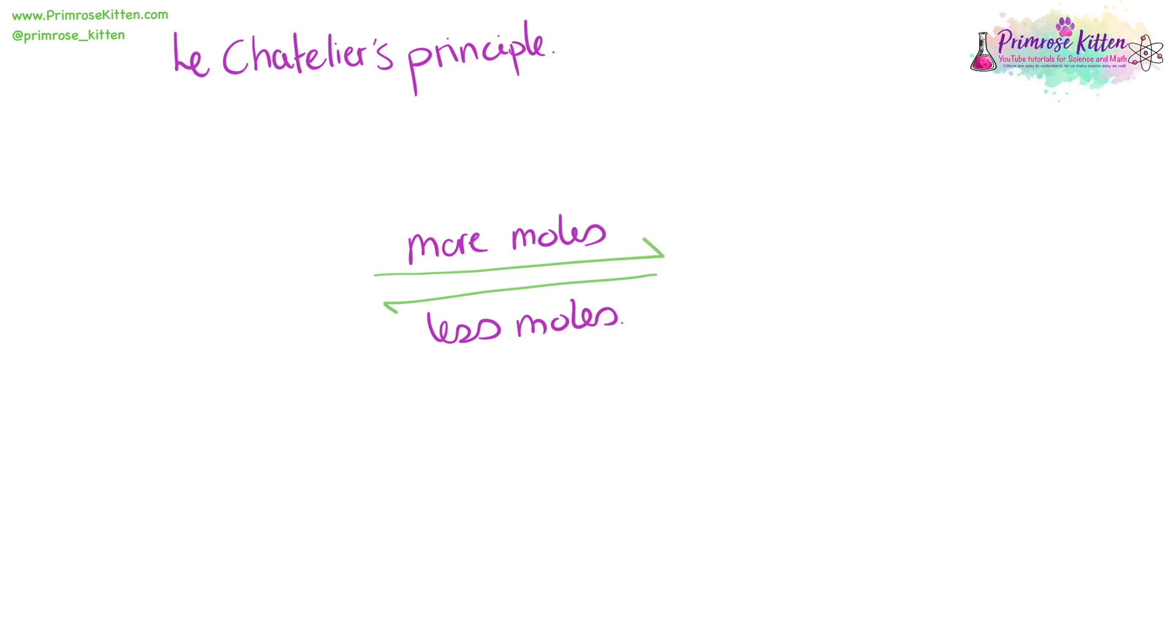If you're going to change the temperature or the concentration, the reaction will also adjust itself to compensate. If you're going to increase the pressure or the concentration, then the reaction will shift to the side that has less moles to compensate. If you're going to decrease, then it will shift to the side that has more moles to compensate.